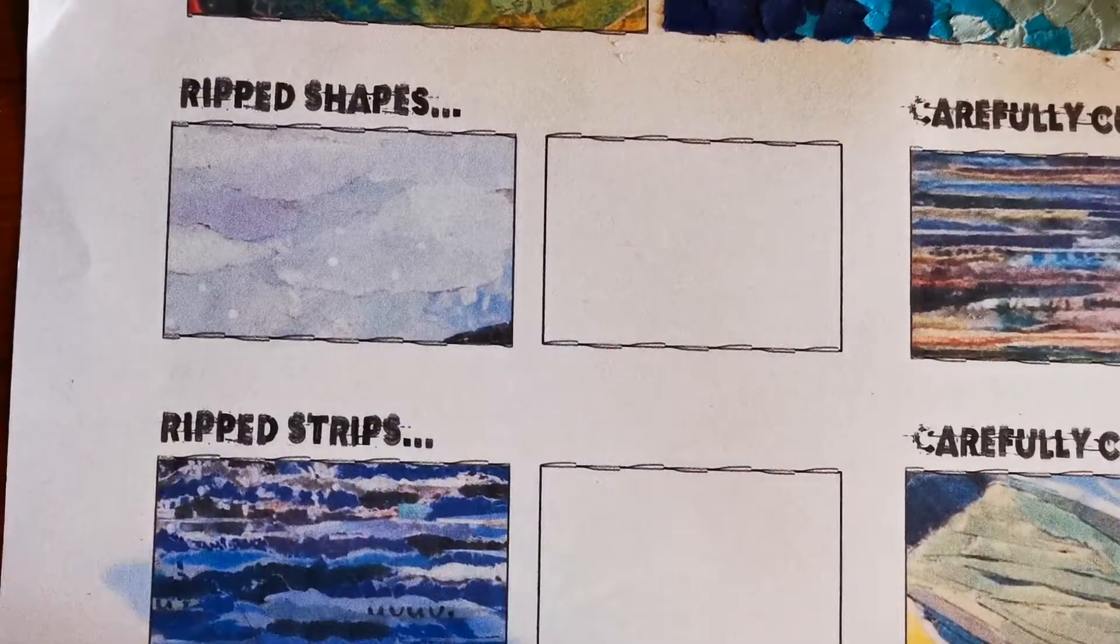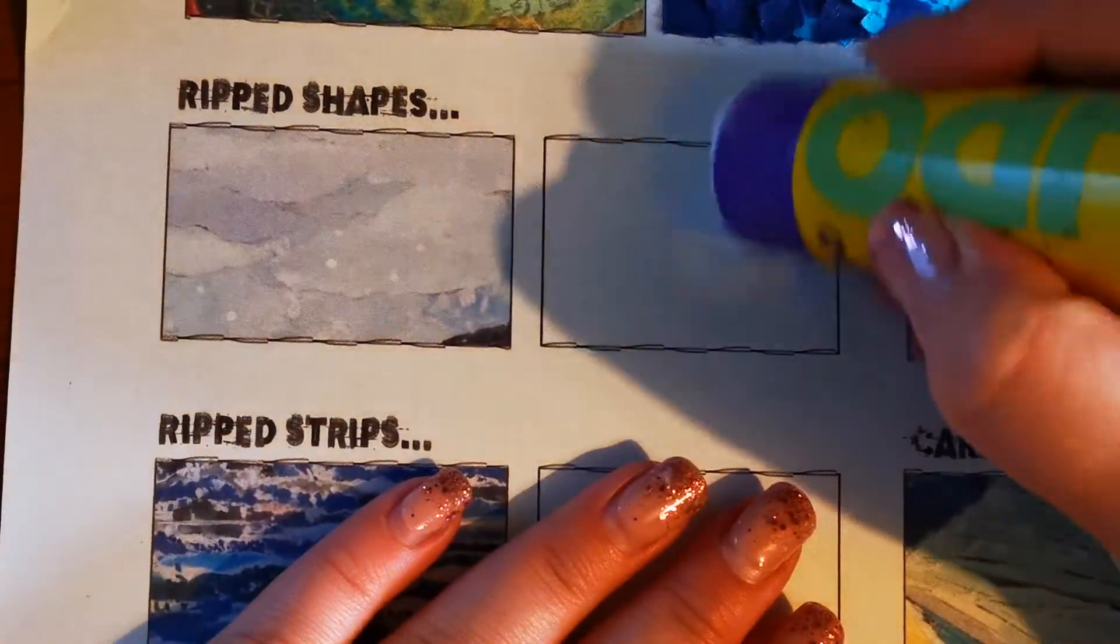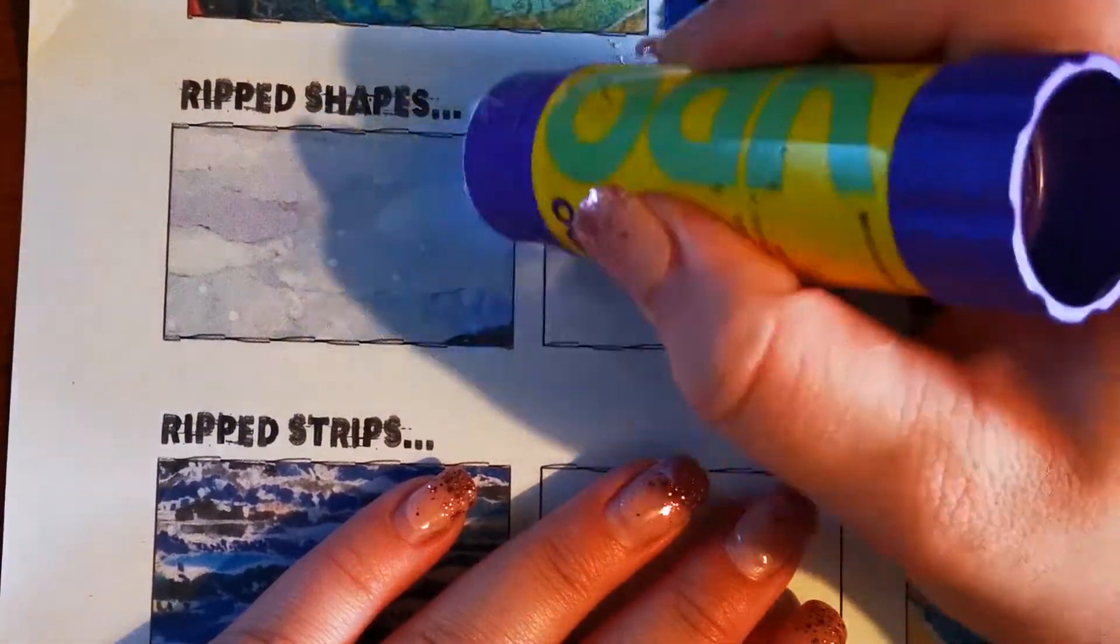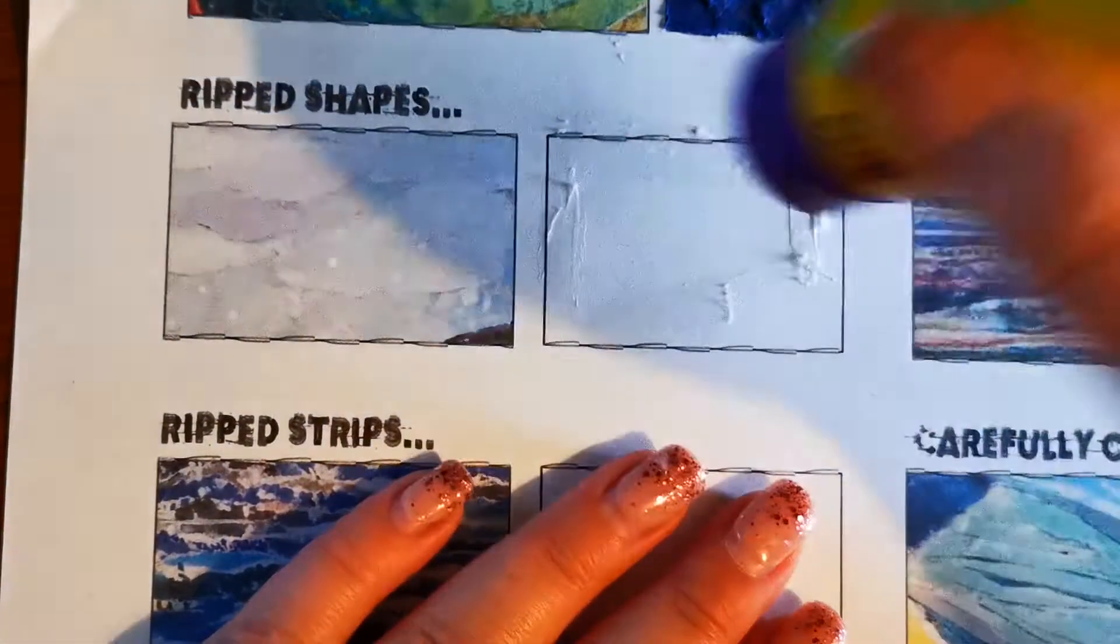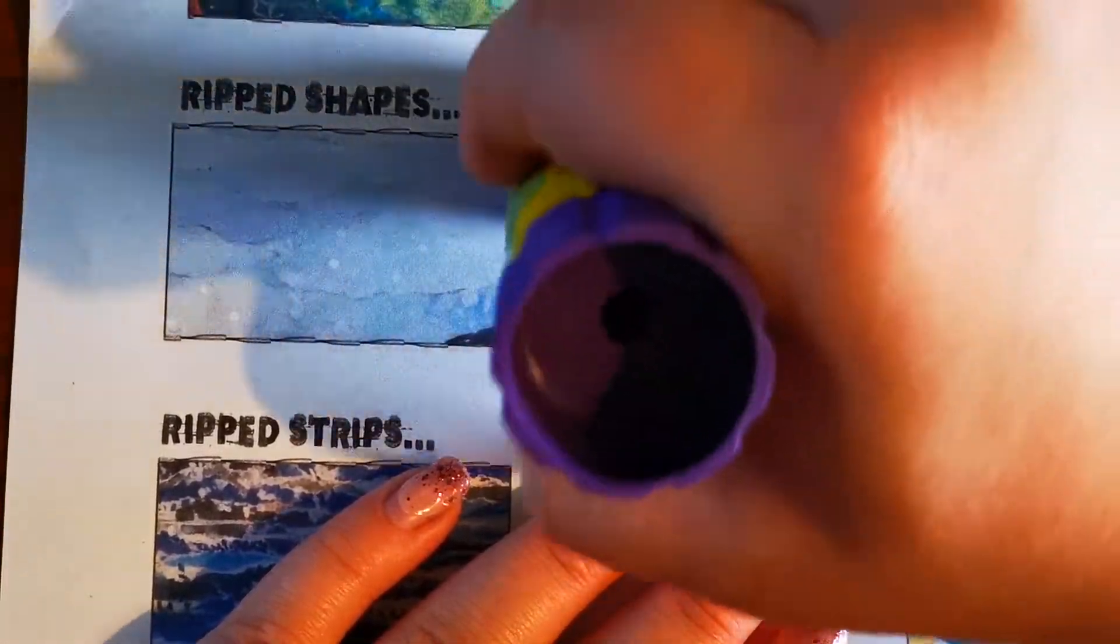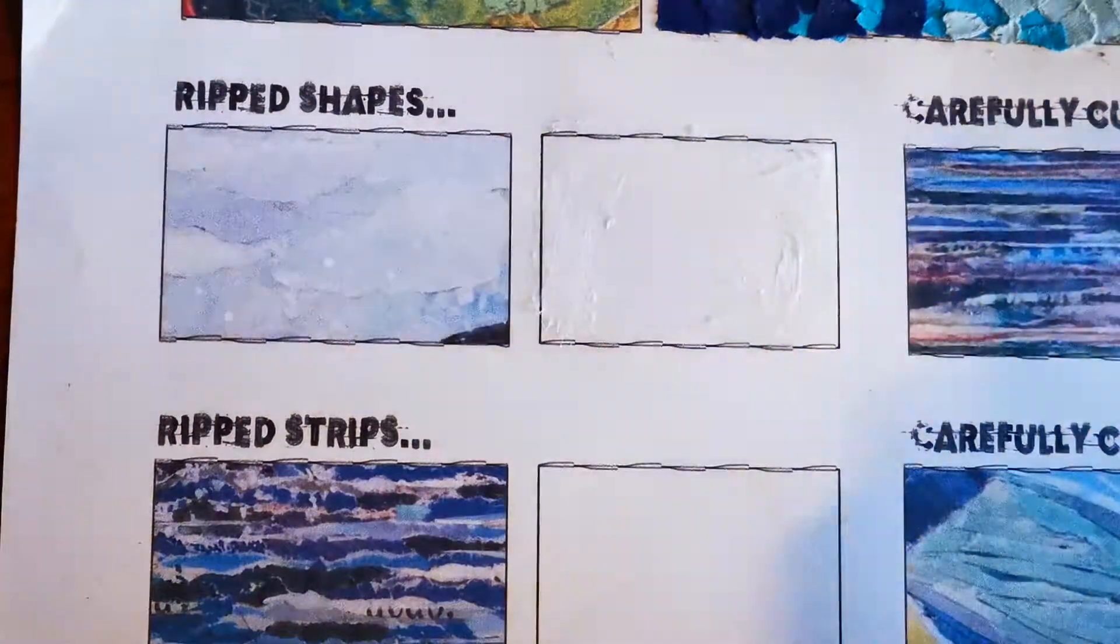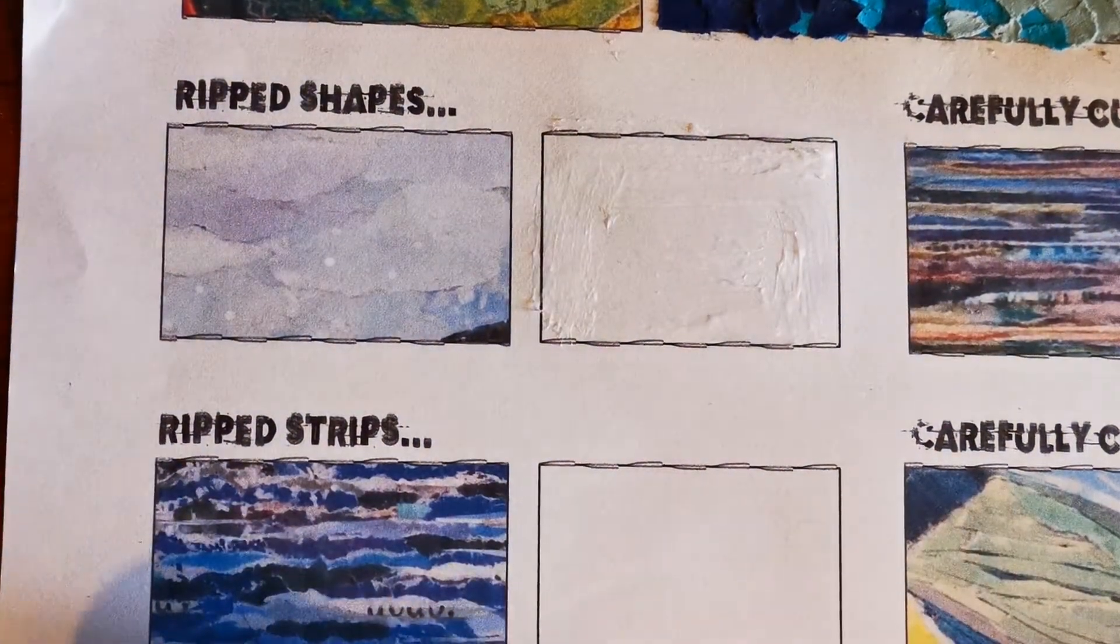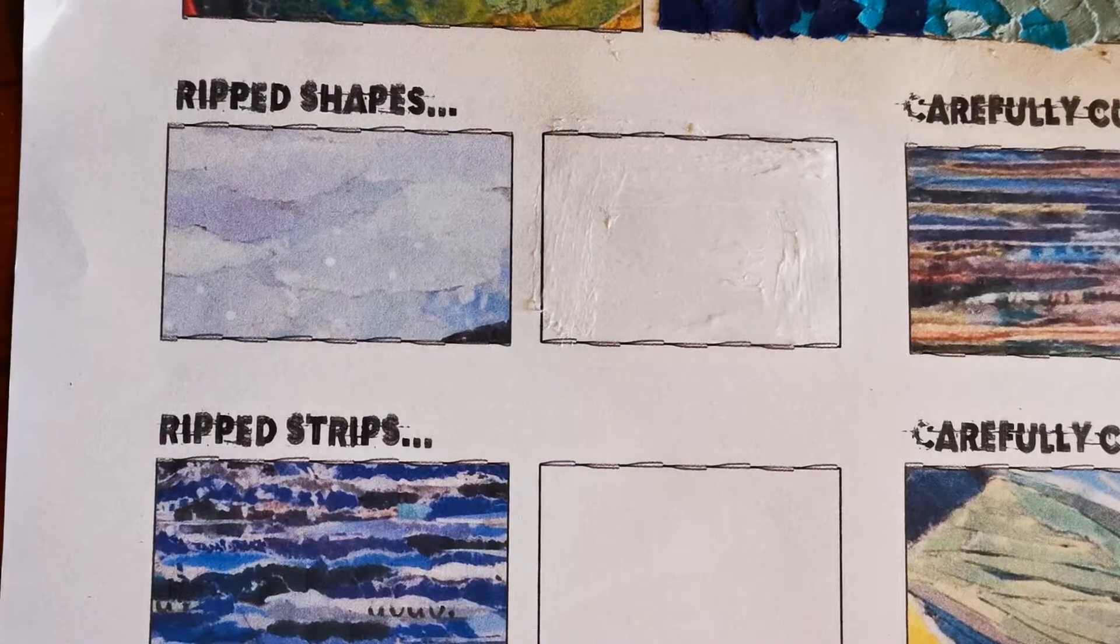So the most common collage technique is ripped, just ripped shapes and we've done this before in art. Just a recap on how to show control and skill though, depending on what image it is that you're trying to recreate, depends on what type of shapes that you're going to rip up.